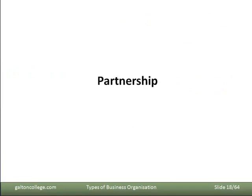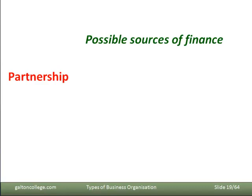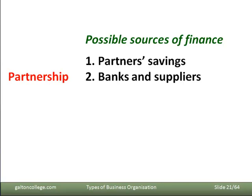The next type of business is partnerships — slightly more sophisticated, with more people involved getting together to set up a business. There are issues that make this a problem; it's not all plain sailing. The possible sources of finance are very similar to the sole trader: their savings, the banks, and suppliers as mentioned earlier.